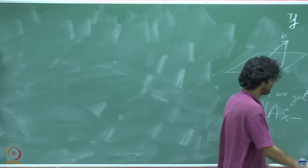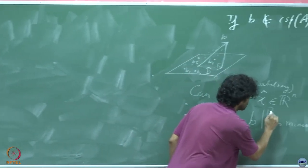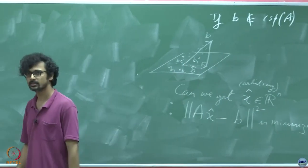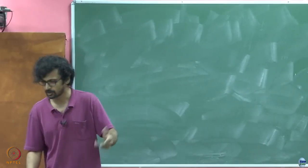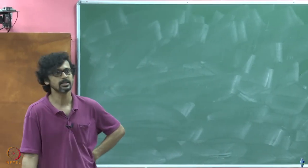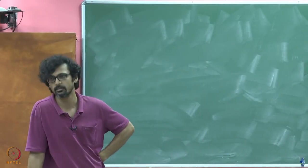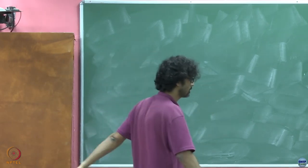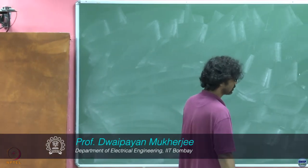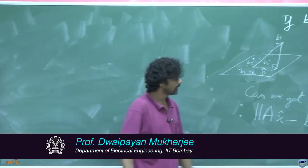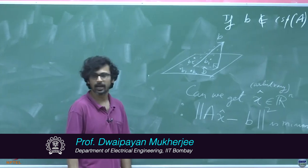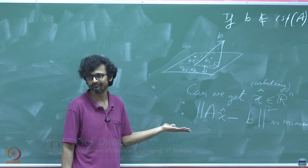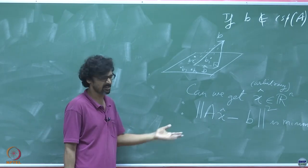You will agree that if I just square it here it does not make a difference — it is a positive number, and wherever the positive number is minimized, its square is also minimized. So let us take this as a minimization of this, but this we know has a certain form; it is representable as an inner product.